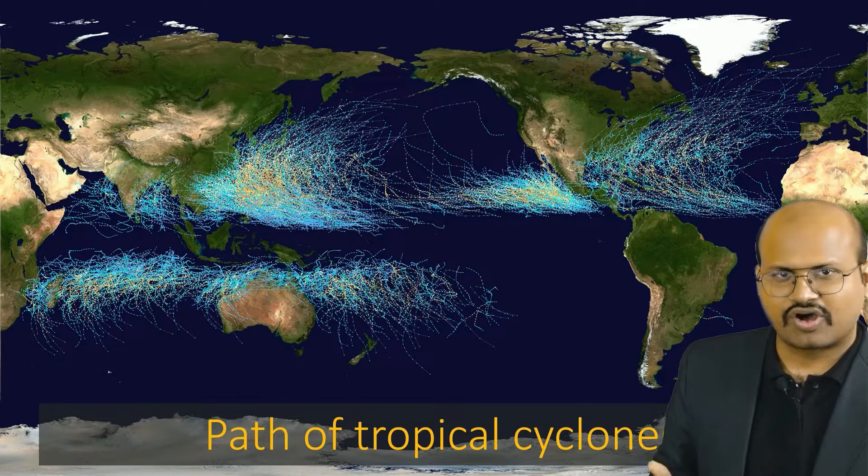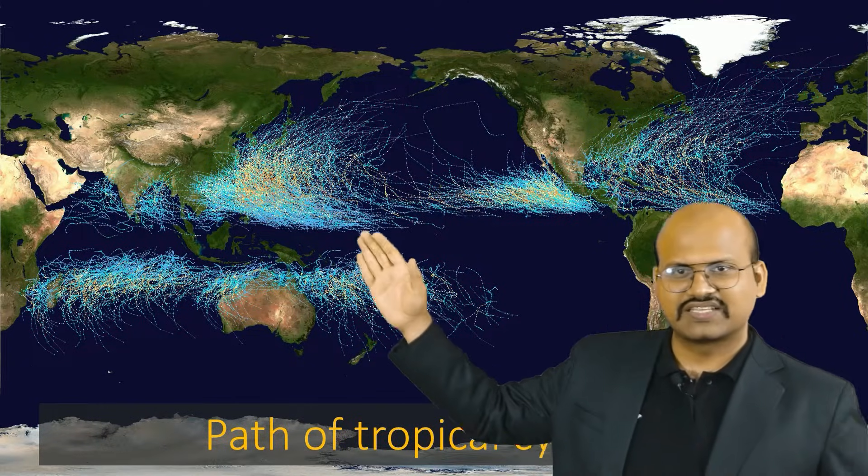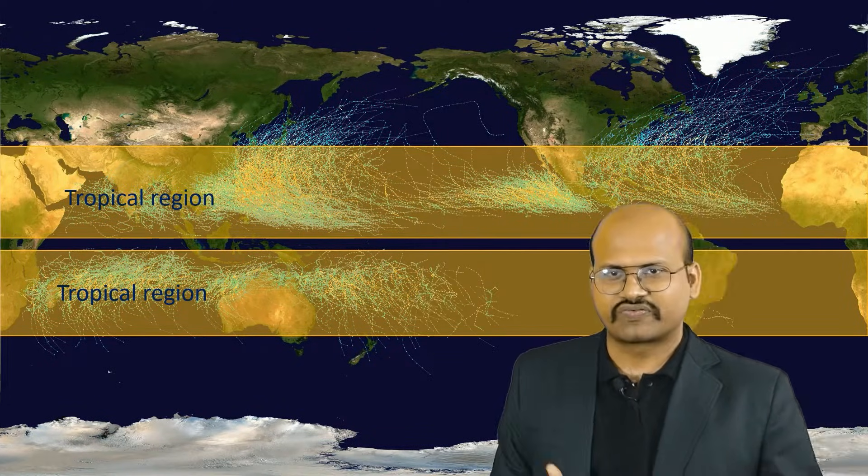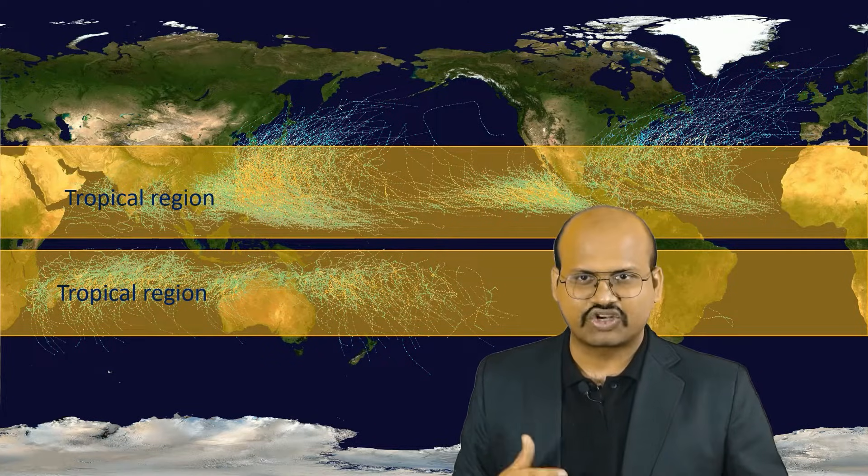If we plot on this world map, we can see that the area is somewhere around 5 degrees north and south to 30 degrees north and south, where we find most of the tropical cyclones in the tropical region.